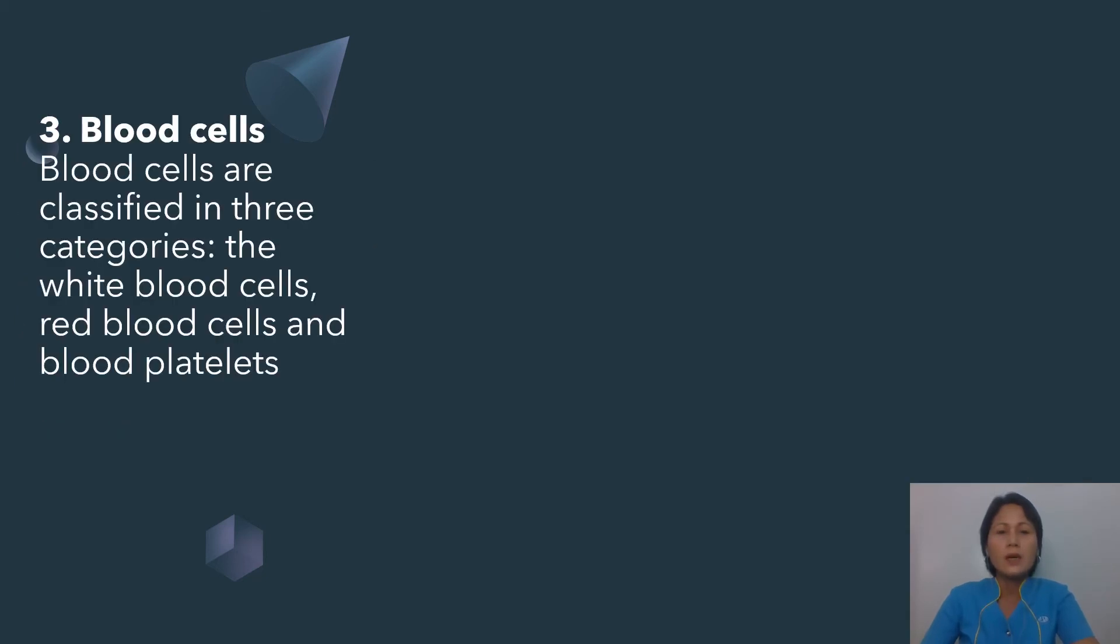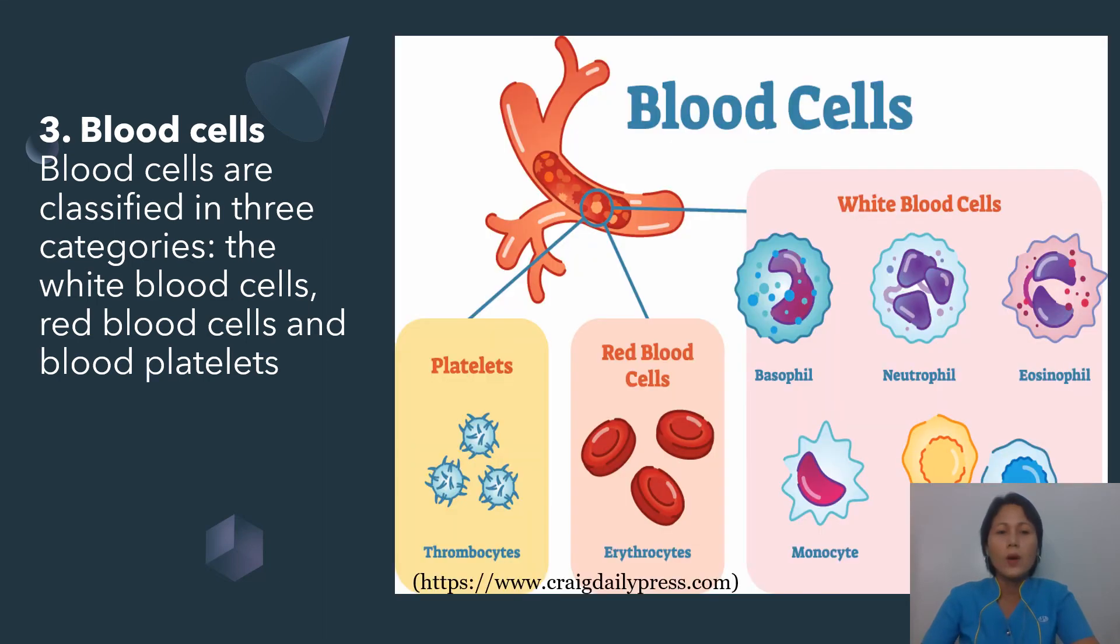Blood cells are classified into three categories. The white blood cells, which are the army of the body fighting against infections and diseases. The red blood cells, to transport oxygen and carbon dioxide. And the blood platelets, responsible for blood clotting mechanism.